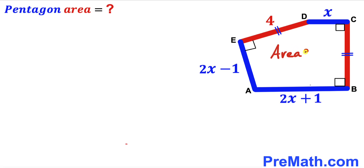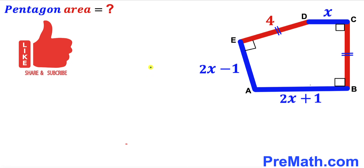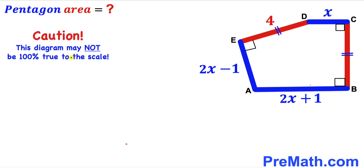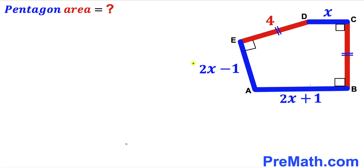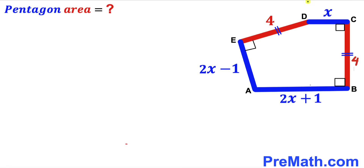Please don't forget to give a thumbs up and subscribe, and keep in mind that the figure may not be 100% true to scale. Our first step: we know that segment ED equals segment BC. Since ED is 4, segment BC is 4 units as well.